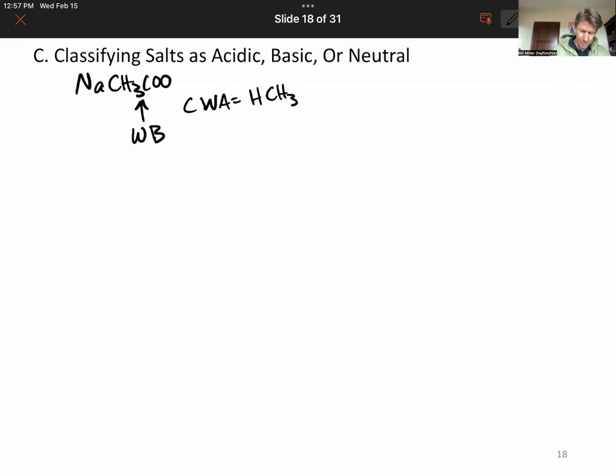We can calculate its Kb value. Its conjugate weak acid is CH3COOH. We can look up and get the Ka value of this, which is Ka equals 1.8 times 10 to the minus 5th. For its conjugate, the weak base acetate, Kb equals 1 over Ka for the conjugate, and we got 5.6 times 10 to the minus 10.